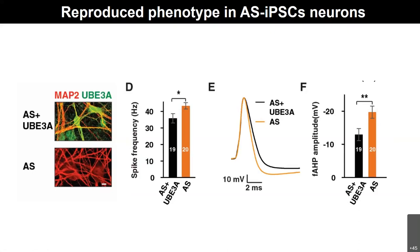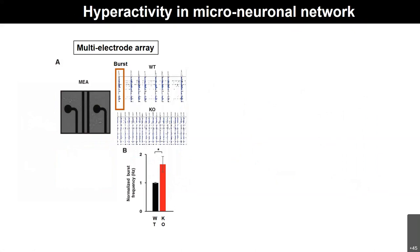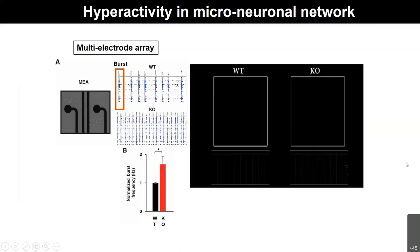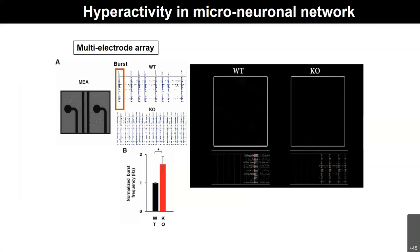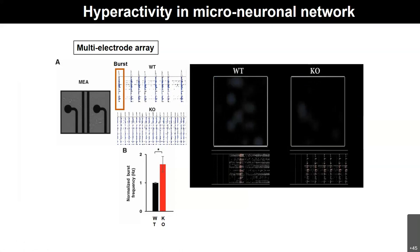We want to understand the network level, because ultimately it is a network hyperactivity — a seizure-like activity — but the phenotype I showed so far is only a cell-intrinsic deficit. To do that, we turned to another assay known as multi-electrode array, also known as MEA. We essentially plate neurons onto gold-plated electrodes and measure the electrode activities of this ensemble of hundreds of neurons, documenting their burst firing. Indeed, upon quantification, we realize that in the knockout there is higher synchrony and higher frequency of burst-like firing. A movie shows that the knockout cells seem to have this synchronized bursting a lot more often than the wild-type cells.